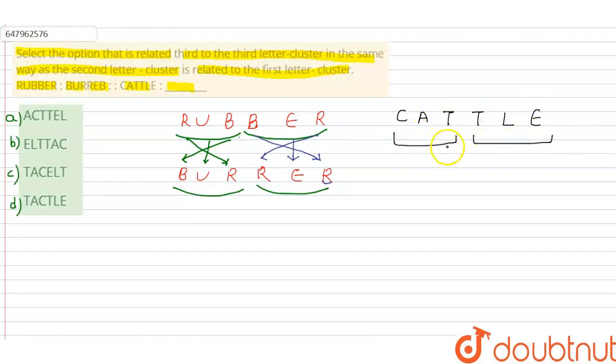We will apply this pattern. T will be here, A will be here, C will be here, T will be here, E will be here, L will be here. So when we decode it, we get T-A-C-E-L-T. Which option is given in our options? Option number C. C is our correct answer. Thank you.